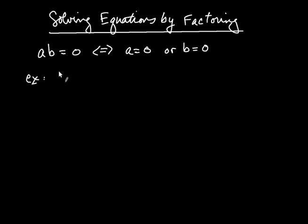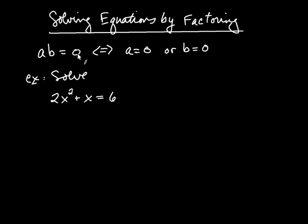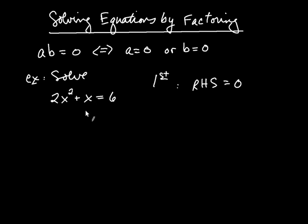Let's see an example of how this works. Let's say we were asked to solve 2x squared plus x equals 6. We have to put our equation into this form. The first thing you have to do is get zero on the right-hand side. So we're going to subtract 6 from both sides, and we get 2x squared plus x minus 6 equals zero.